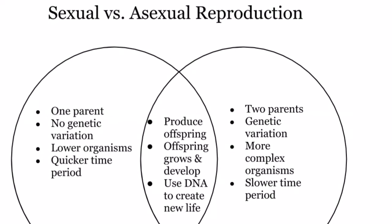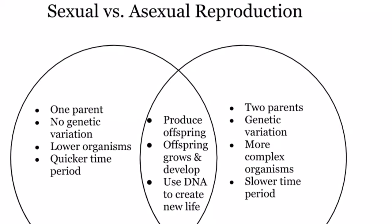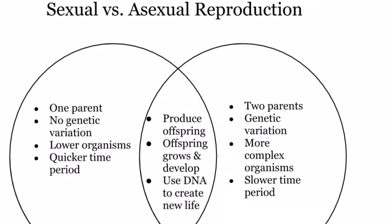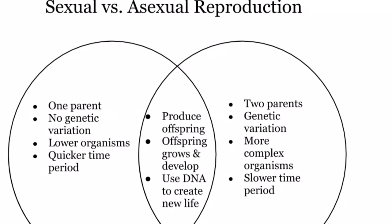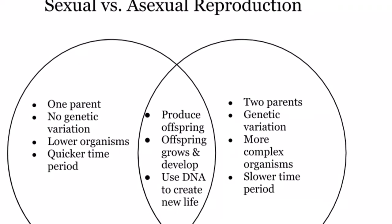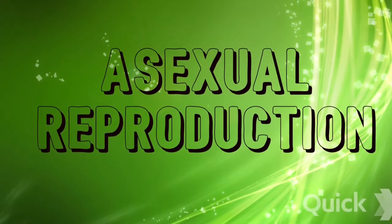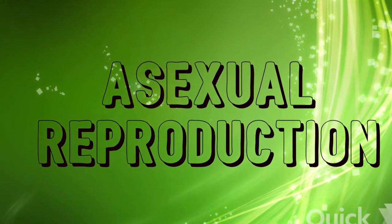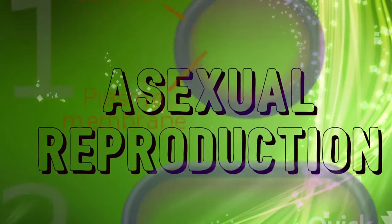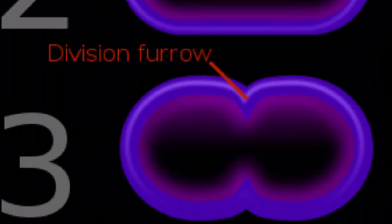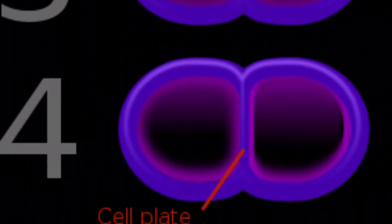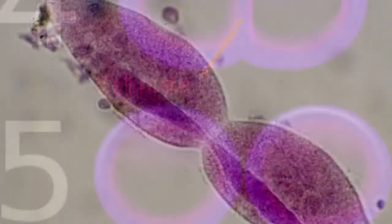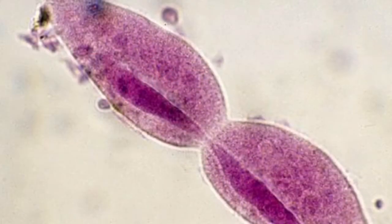There are four forms of asexual reproduction: binary fission, budding, spores, and vegetative reproduction. During binary fission, the parent splits into two, producing two new cells. These cells will be made up of exactly the same genetic structure.